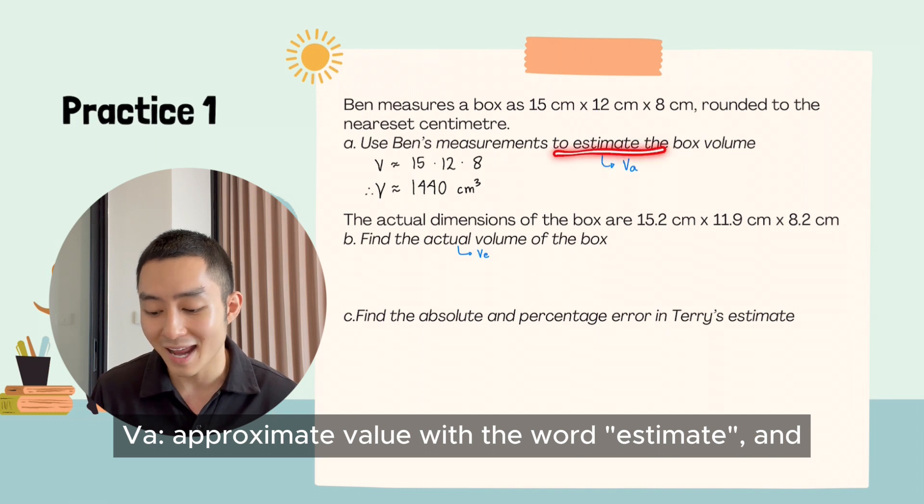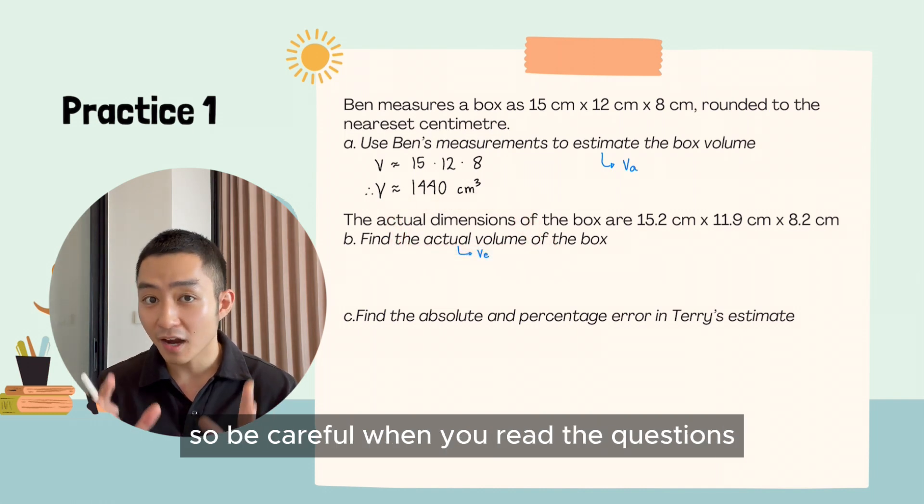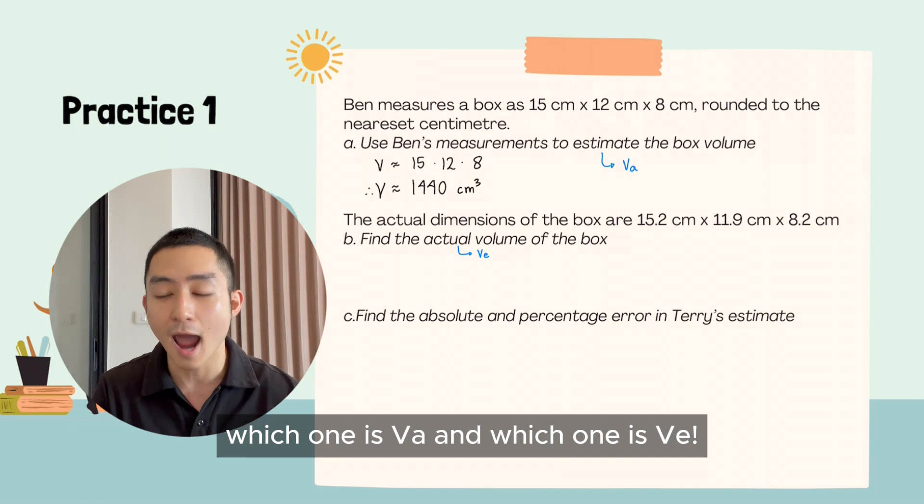VA, approximate value with the word estimate, and VE, exact value with the word actual. So be careful when you read the questions and make sure to note which one is VA and which one is VE.